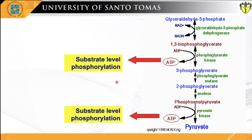Substrate-level phosphorylation exists in glycolysis. In the oxidation of 1,3-bisphosphoglycerate and phosphoenolpyruvate — which are high-energy compounds — the energy released from their oxidation exceeds what is needed for the phosphorylation of ADP to produce ATP. The ATP yield may be low, but this process is quicker and can occur in cells without mitochondria, like red blood cells, or even in oxygen-depleted tissues.